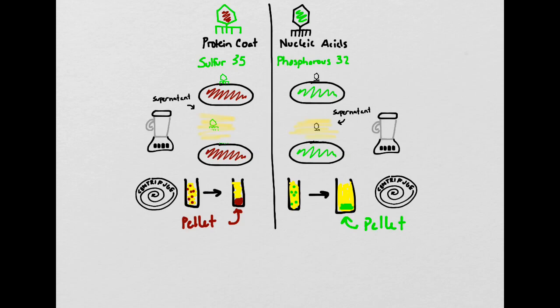Remember, the goal was to make radioactive bacteriophages, which would be found in the pellet. In the situation where they had tagged the protein coat, the supernatant was radioactive. However, the pellet containing the new bacteriophages was not radioactive, and so they decided that that must not be the molecule of inheritance. In the case of the radioactive nucleic acids, however, all of the new bacteriophages contained within the pellet were radioactive, and this told them that nucleic acids was actually the molecule of inheritance.